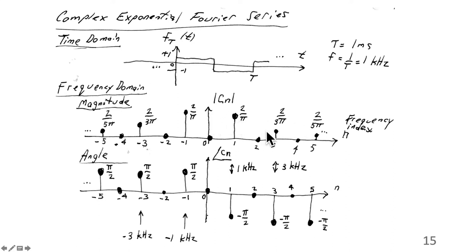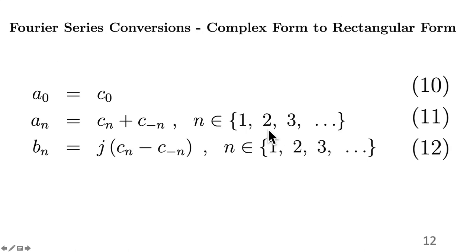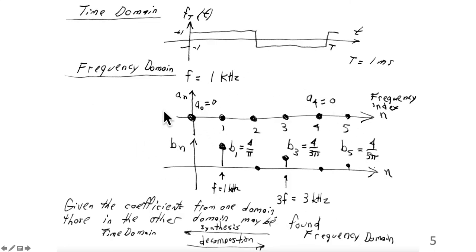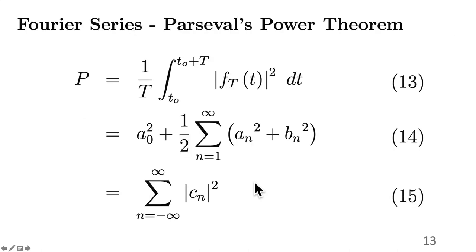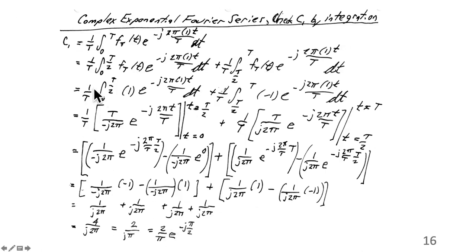The rectangular series only had positive values. In the rectangular series, in the frequency domain, only positive values existed — b1 was 4 over pi. Whereas in the complex exponential domain, you have negative frequencies. Working out this integral for c1: the integral is 1 over T, integrated from 0 to T of f sub-T of t times e to the minus j 2 pi times 1 times t over capital T dt. Because f of t has different values, this integral is broken up into 0 to T over 2 and T over 2 to T. Between t equals 0 to T over 2, f of t is 1; between T over 2 to T, f of t is minus 1.